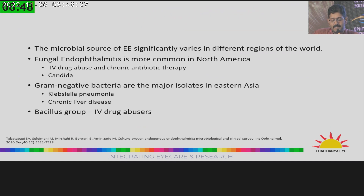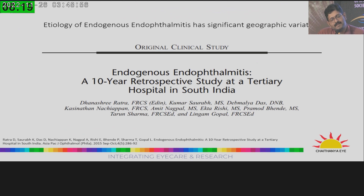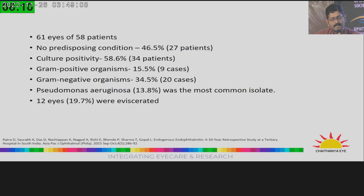The microbial source significantly varies in different parts of the world. Fungal endophthalmitis is more common in North America where IV drug abuse is implicated, and Candida is the most common organism isolated. In Eastern Asia, gram-negative bacteria predominate, with Klebsiella pneumoniae being most common. Bacillus group has been associated with IV drug abuse. A 10-year study from Shankar Netrala studied 61 eyes of 58 patients — about 46% had no predisposing condition. Culture positive was found in 58%, with gram-positive organisms at 15.5% and gram-negative at 34.5%. Pseudomonas aeruginosa was the most common isolate, and two eyes had to be eviscerated.